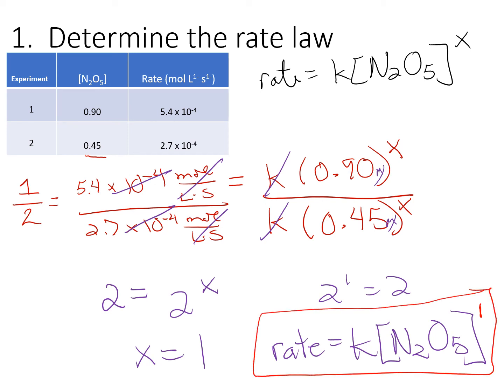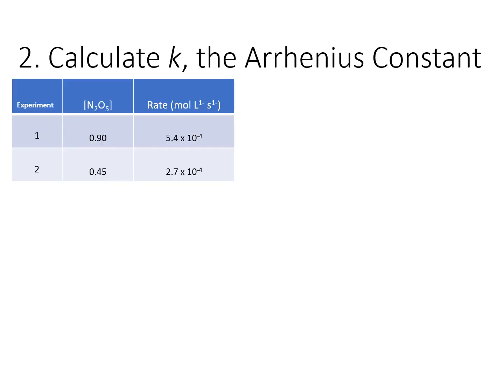Once we know that, we can determine the value of K. K is determined by using our rate law that we just calculated and using the data from one of the experiments. It does not matter which one you use. We will just solve for K. I'm going to rearrange first. If I set K by itself, it's going to be the rate divided by the concentration of N2O5 raised to the first power.